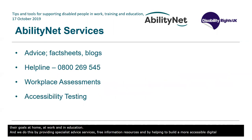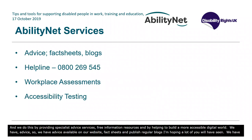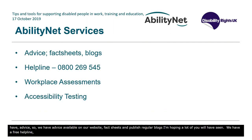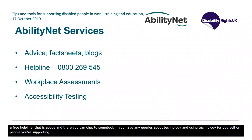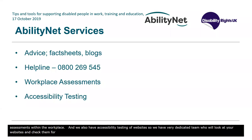We have advice available on our website, fact sheets, and regular blogs. We also have a free helpline at 0800 269 545, where you can chat to somebody about queries regarding technology for yourself or people you're supporting. One of our key services is workplace assessments — we carry out needs assessments within the workplace. We also have an accessibility testing team for websites, who will look at your websites and check them for accessibility so they can be used by everybody.